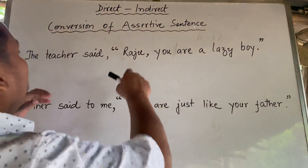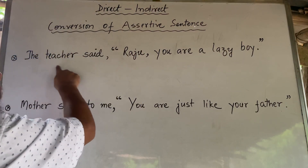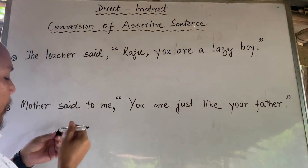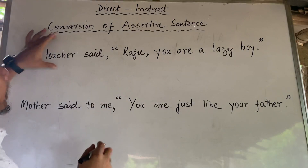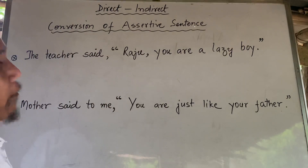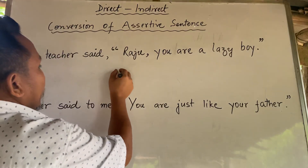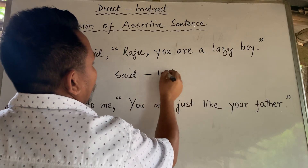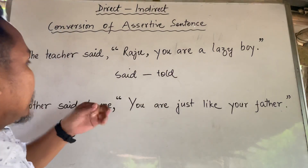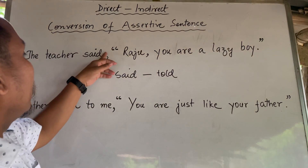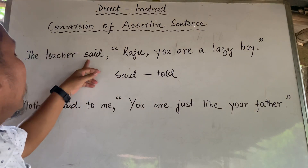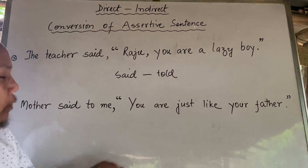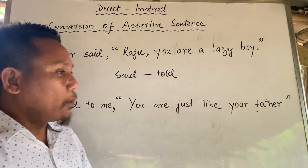This is an assertive sentence. The assertive sentence is changed. The teacher said, and 'tall' is the object.